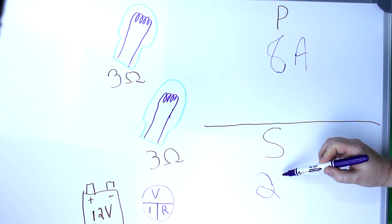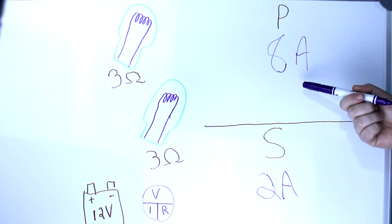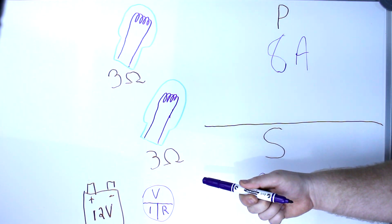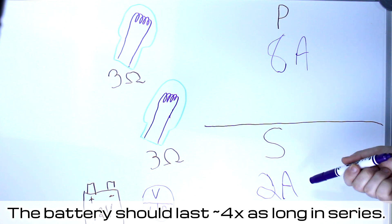2 amps. So look at that. The difference between a series and parallel is not even half. This is a quarter of the amperage of this. So running these two light bulbs in series is going to dim the bulbs a bit, but you are using a quarter of the power to do it.